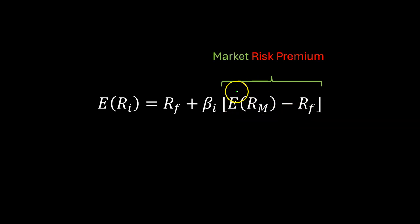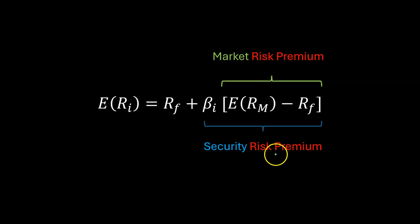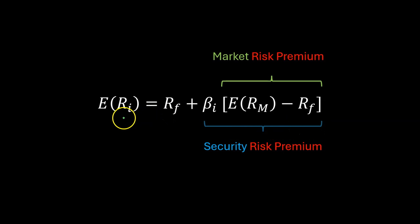This expression is the expected market risk premium. You can think of this as the extra return or extra compensation that investors require for investing in a diversified portfolio of stocks, which is risky. If you multiply that with the beta of the specific stock you're considering investing in, then that entire expression is called the security's risk premium. In other words, investors are saying this is the total amount of extra return that I want for bearing the risk of investing in this particular security, where the security's beta is essentially capturing the extent to which that specific security is risky.